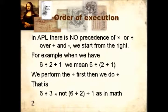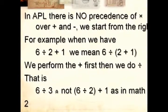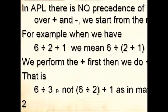In APL, there's no precedence of product or division over plus and minus. We start from the right. For example, when we have 6 divided by 2 plus 1, we mean 6 divided by 2 plus 1. We perform the plus first, then we do the division. That is 6 divided by 3.